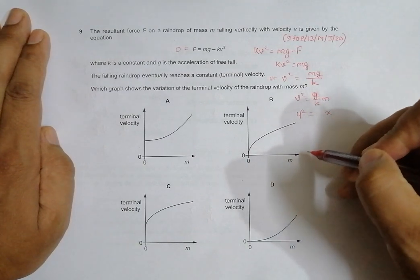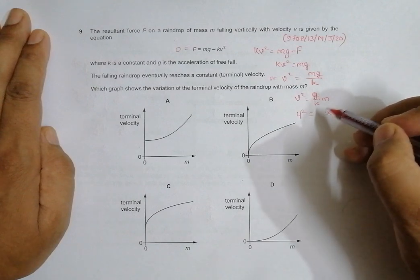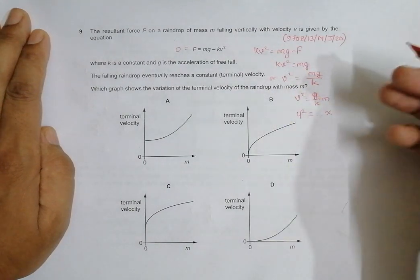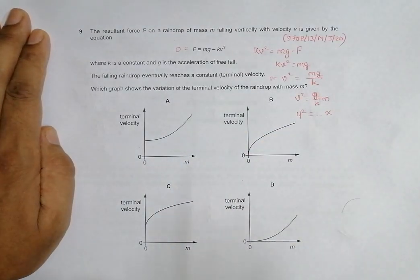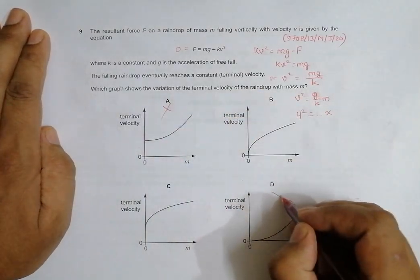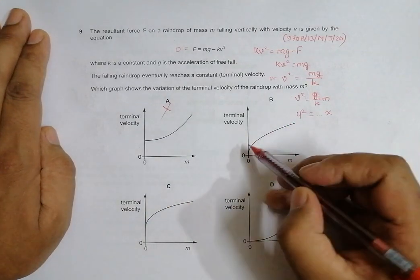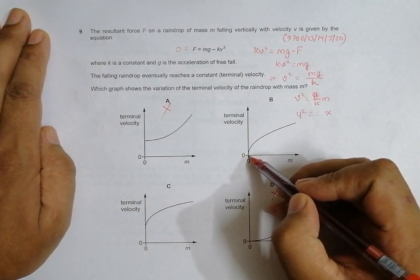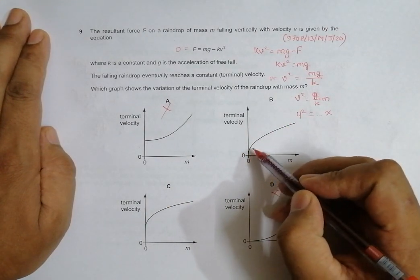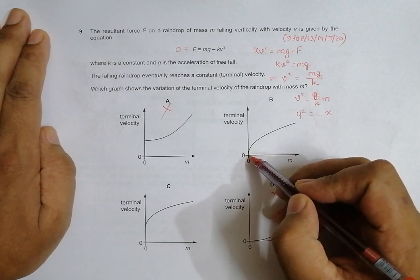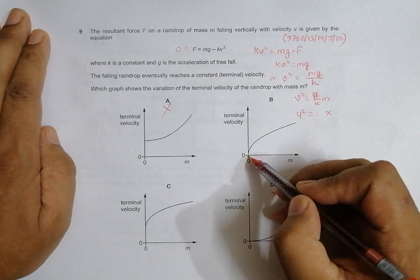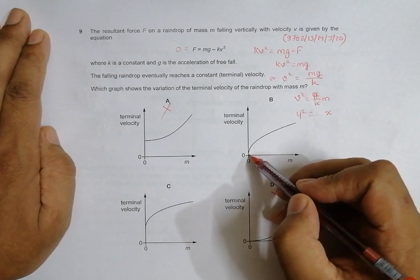It's a perfect parabola actually. So B and C also could be the answer. Let us remove A and D. But this has to go towards x-axis right from the beginning. At the beginning when m is zero, the terminal velocity is zero definitely. So as soon as m increases there should be some velocity.